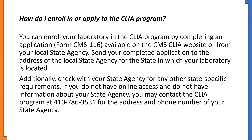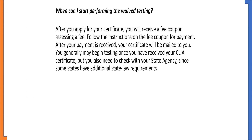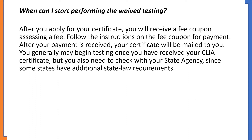Additionally, check with your state agency for any other state-specific requirements. If you do not have online access and do not have information about your state agency, you may contact the CLIA program at 410-786-3531 for the address and phone number of your state agency.